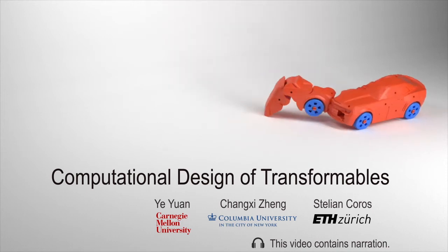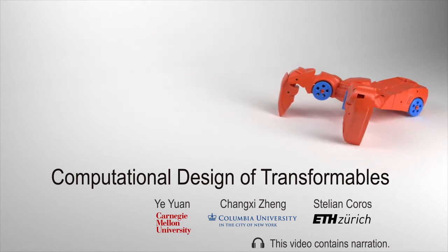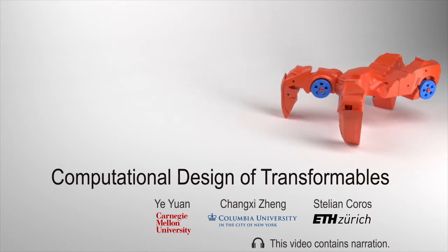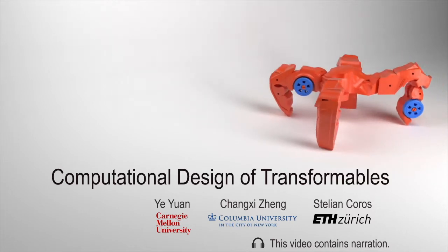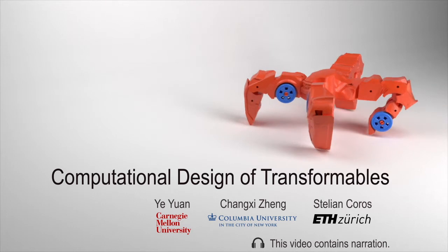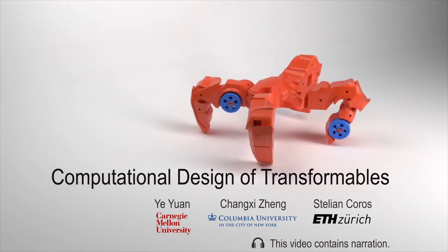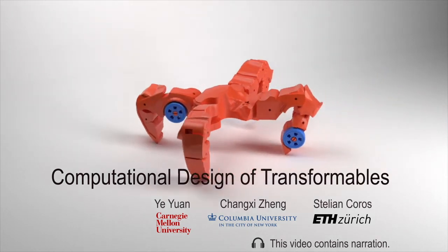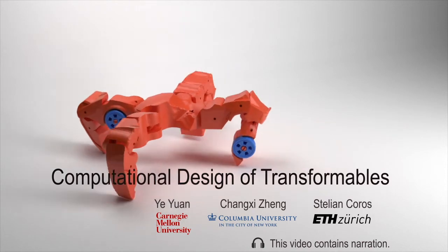Transformables are articulated physical characters that can take on vastly different forms. Just like this car, it can unfold into a spider and start to walk, and then disguise itself again as a car. In this paper, we present a computational approach to designing transformables.